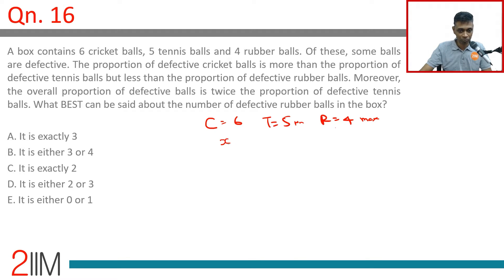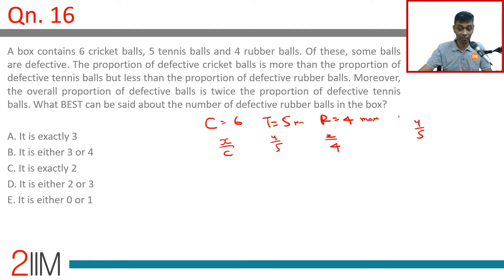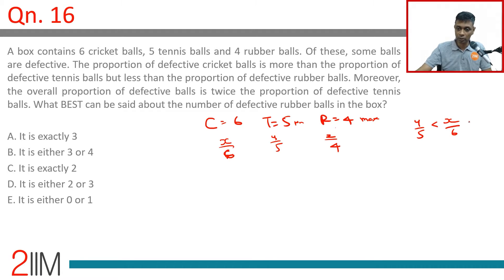Let x, y, z be the number of defective cricket, tennis, and rubber balls respectively. So the proportions are x/6, y/5, and z/4. The inequality is: y/5 < x/6 < z/4.